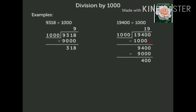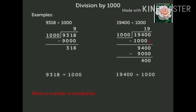Next is division by 1000. Look at the board. We have solved two examples by the division method. Look at the first example: 9,318 divided by 1000. Here we got the quotient as 9 and remainder as 318. Now look at the second example: 19,400 divided by 1000. Here we got the quotient as 19 and remainder as 400. When we divided both the numbers by 1000, the ones, tens, and hundreds digits of the dividend form the remainder and the remaining digits form the quotient.